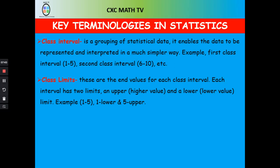There is always an upper class limit and a lower class limit. The lesser value is your lower class limit and the bigger value is your upper class limit.